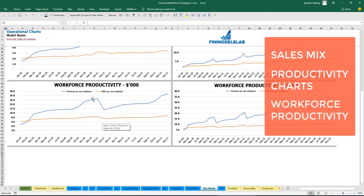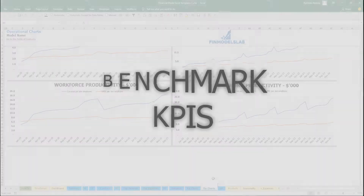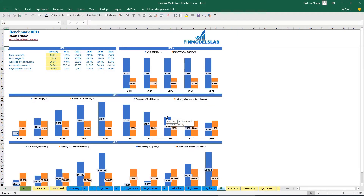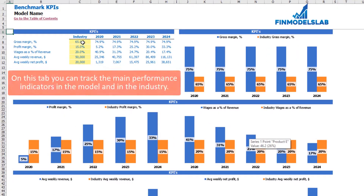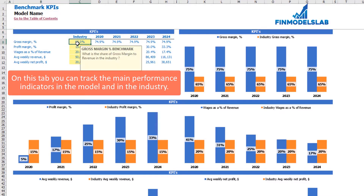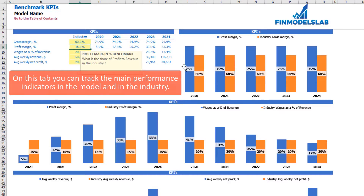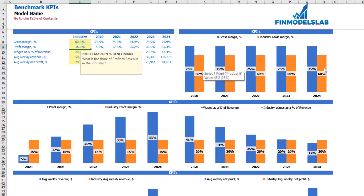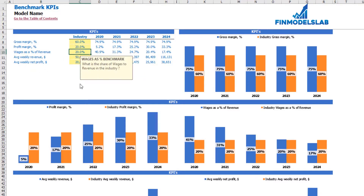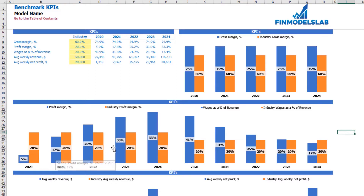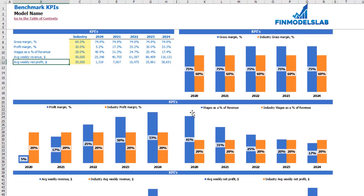On the operational charts you may see the sales mix — count of sold units by products — and productivity charts which is average revenue per day and average OPEX per day, broken down for 2 years and 5 years by months. Also here you may see workforce productivity which is revenue per employee and OPEX per employee. On the benchmarks KPIs tab you may find your main industry-specific KPIs which are changeable for your industry and country — for example gross margin industry benchmark at 60%, profit margin at 20%, wages as a percentage of revenue, average weekly revenue, and average weekly net profit benchmarks.